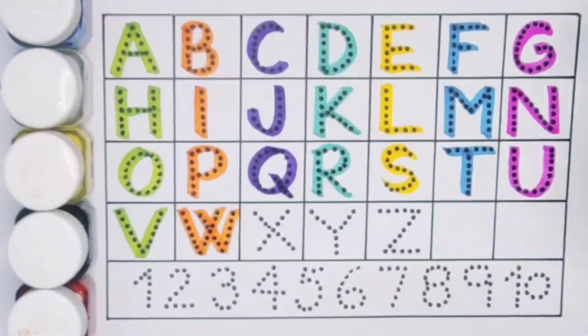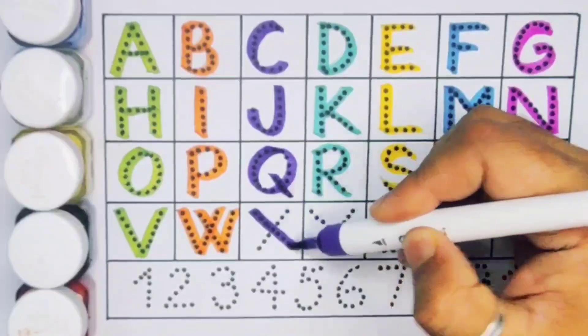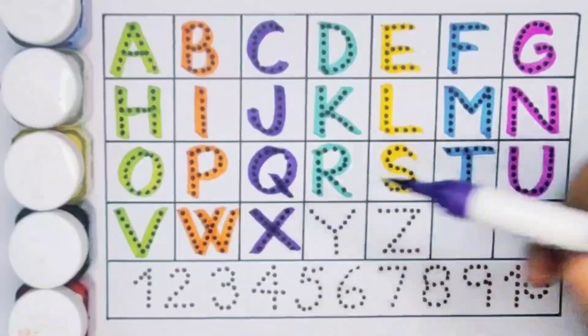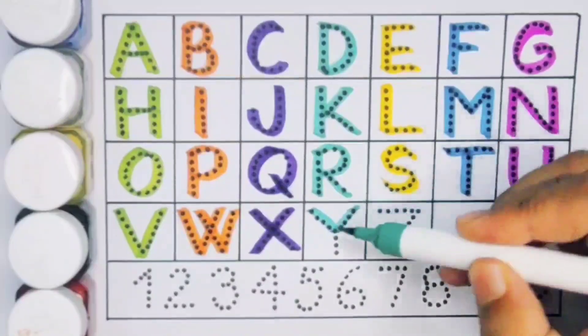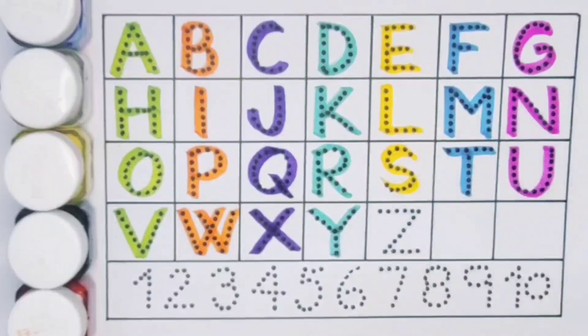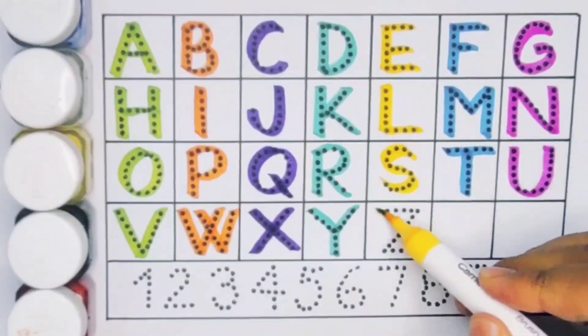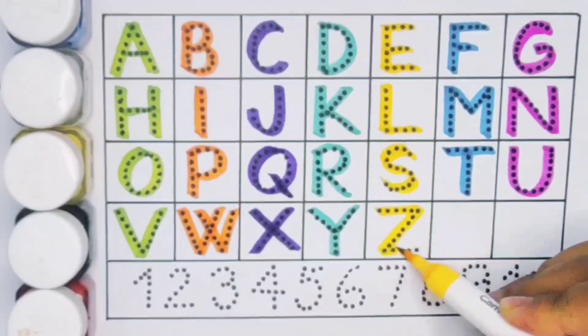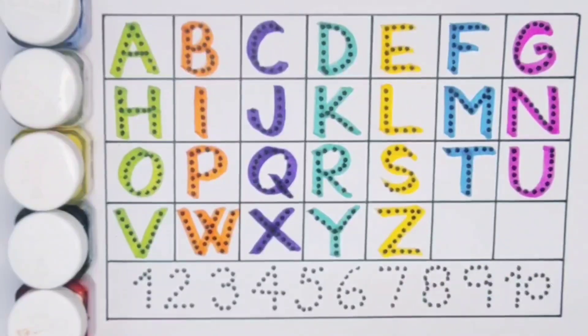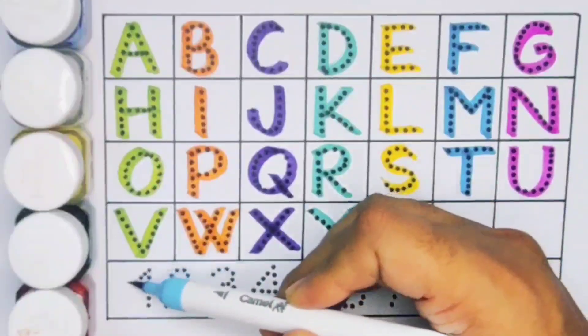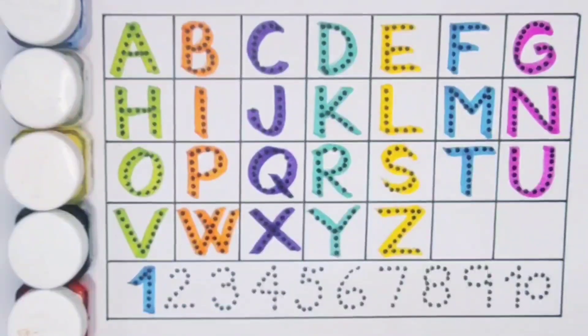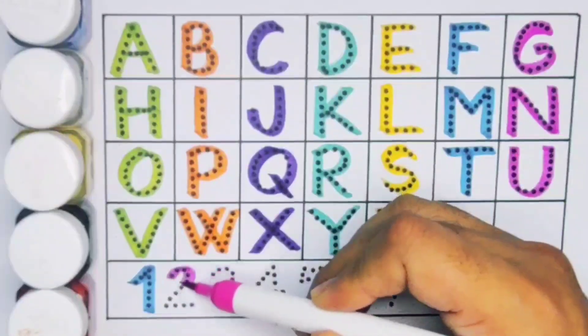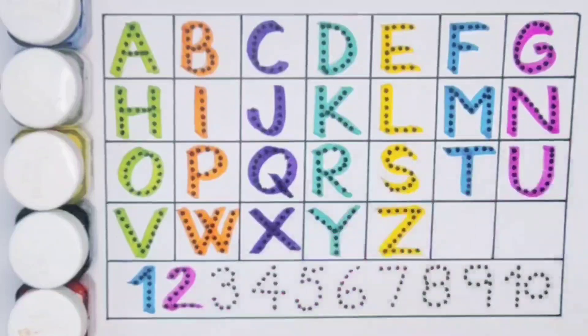Next, X for x-ray. Next, Y for yoga. Next, Z for zoo. Now the numbers counting. Number 1.